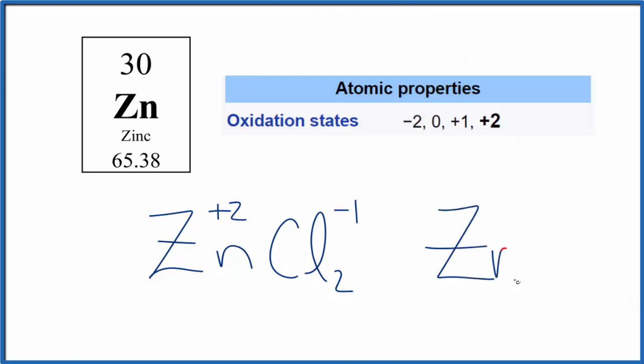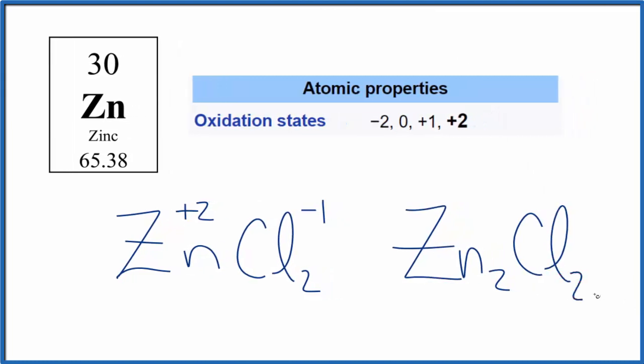But we can also make Zn2Cl2. It's not as common, but this compound does exist. Here again, chlorine is going to be minus one. Each zinc here, for this to all add up to zero, has to be plus one. So we have two times plus one, that's plus two, and two times minus one, that's minus two, which adds up to zero.